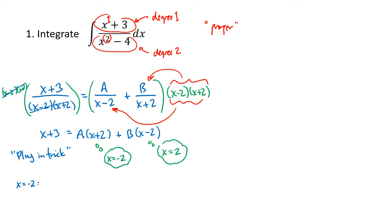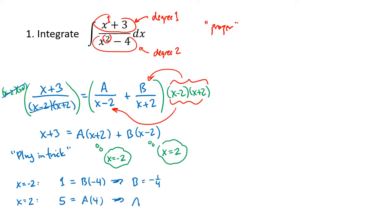Plugging in x equals negative 2: on the left-hand side we get negative 2 plus 3, which is 1. Then a times 0 is 0, and b times negative 4 gives us b equals negative 1/4. Plugging in x equals positive 2: the left-hand side gives 5. We get a times positive 4, and b times 0 goes away, so a equals 5/4.